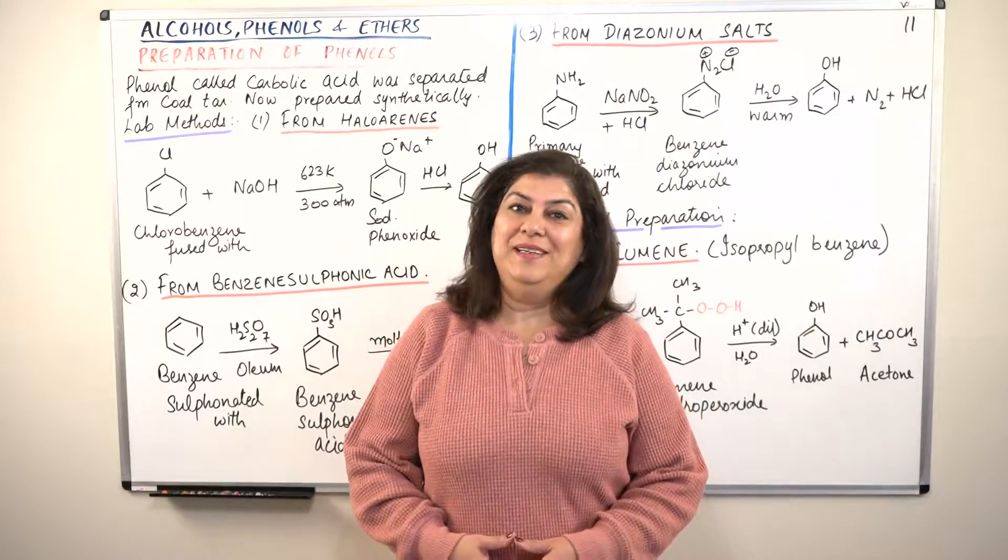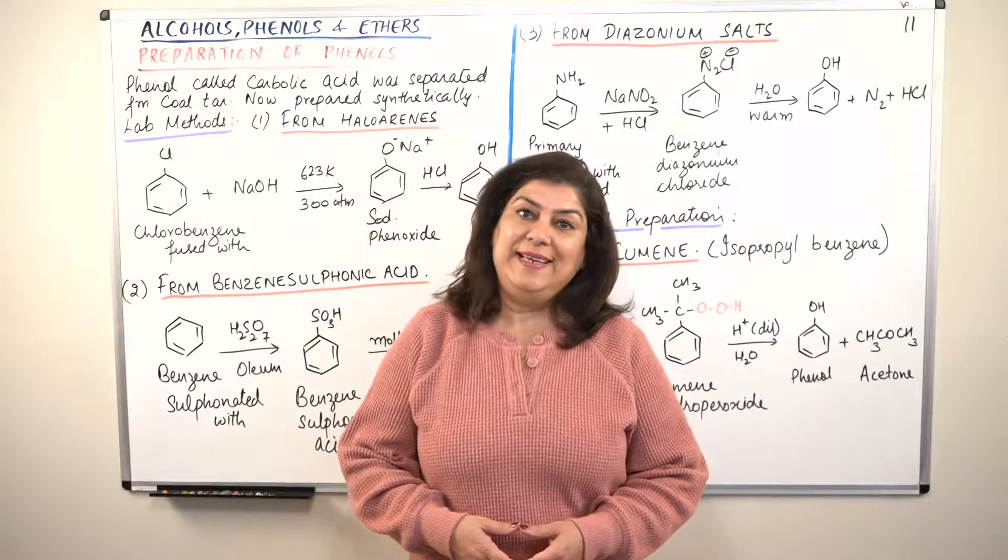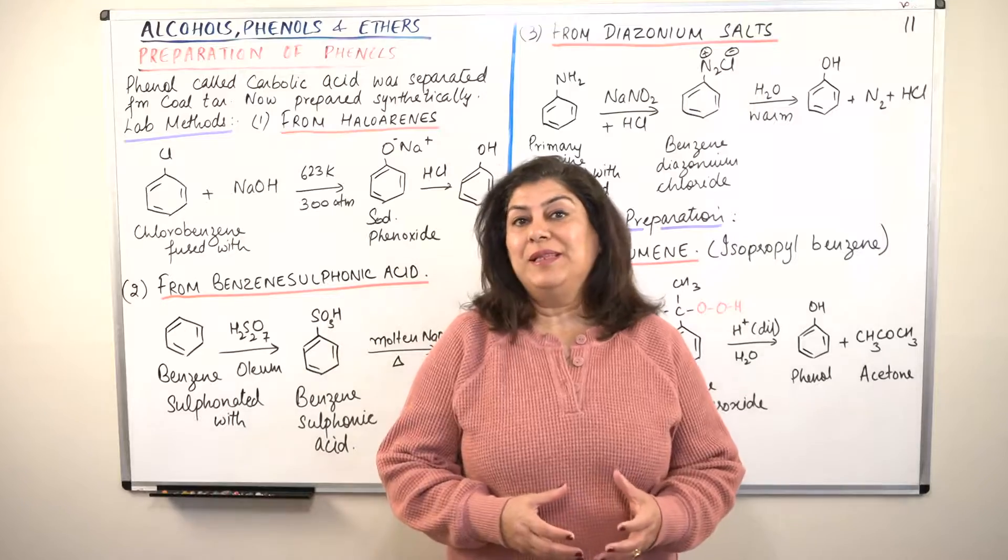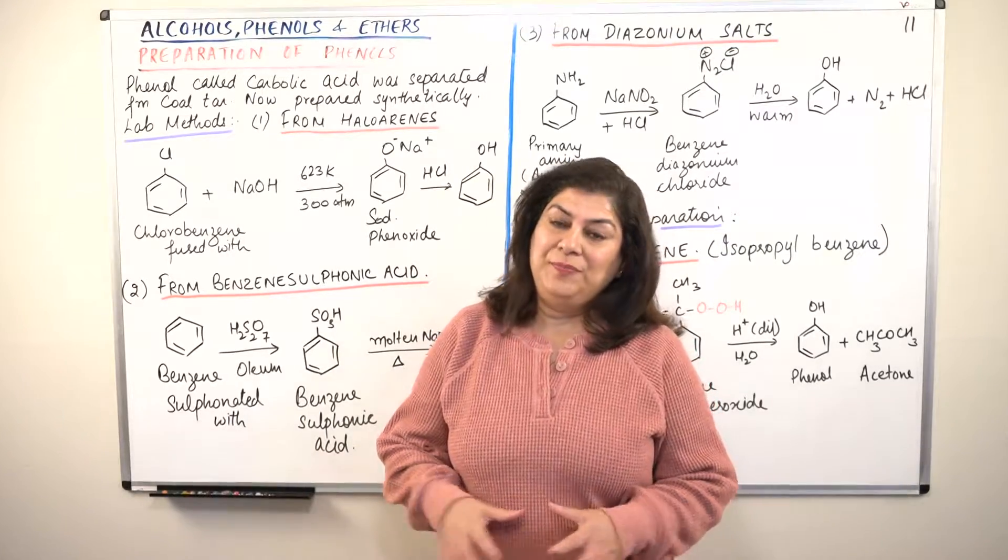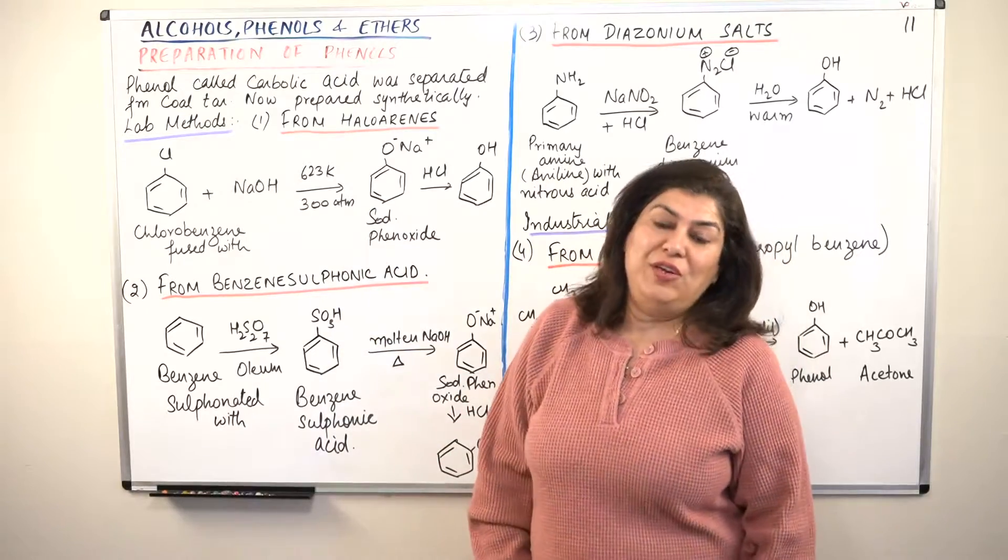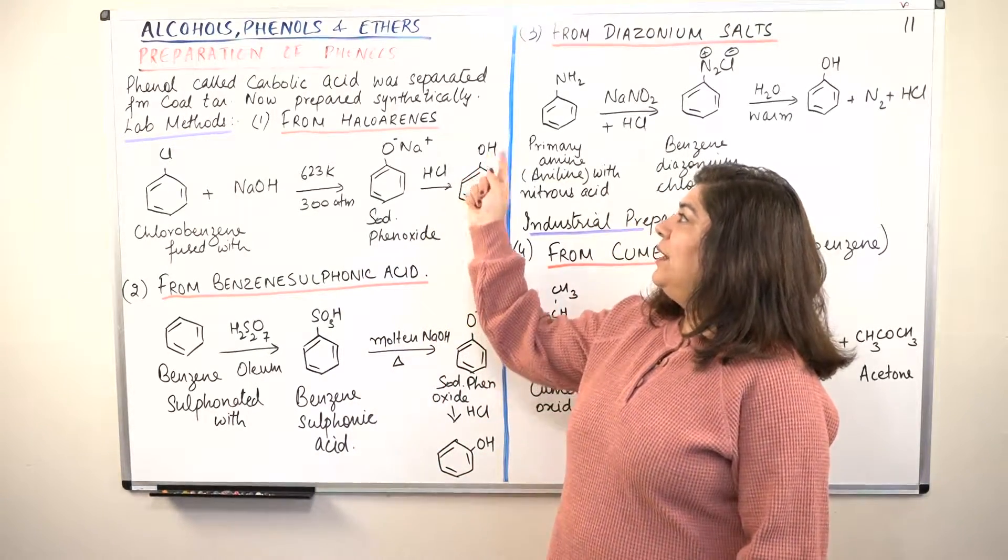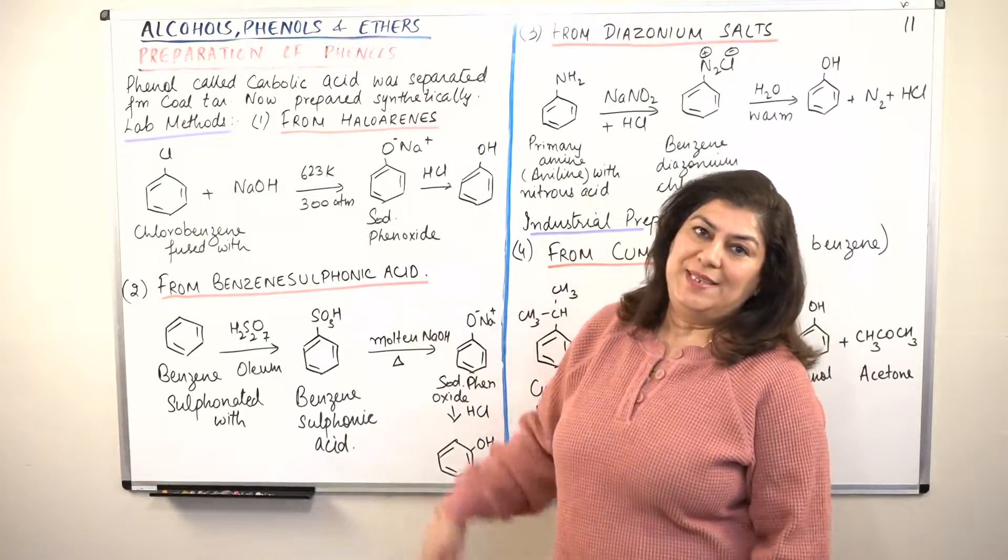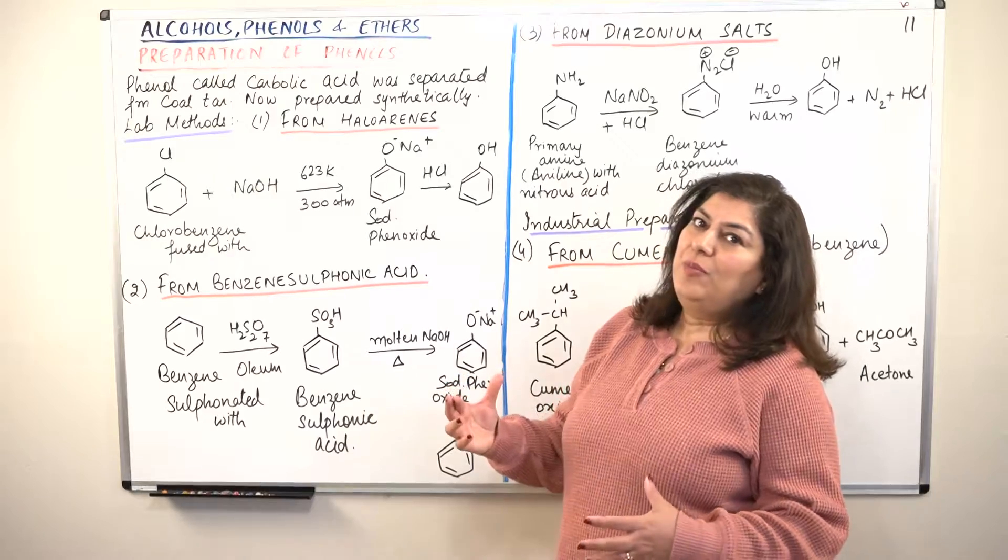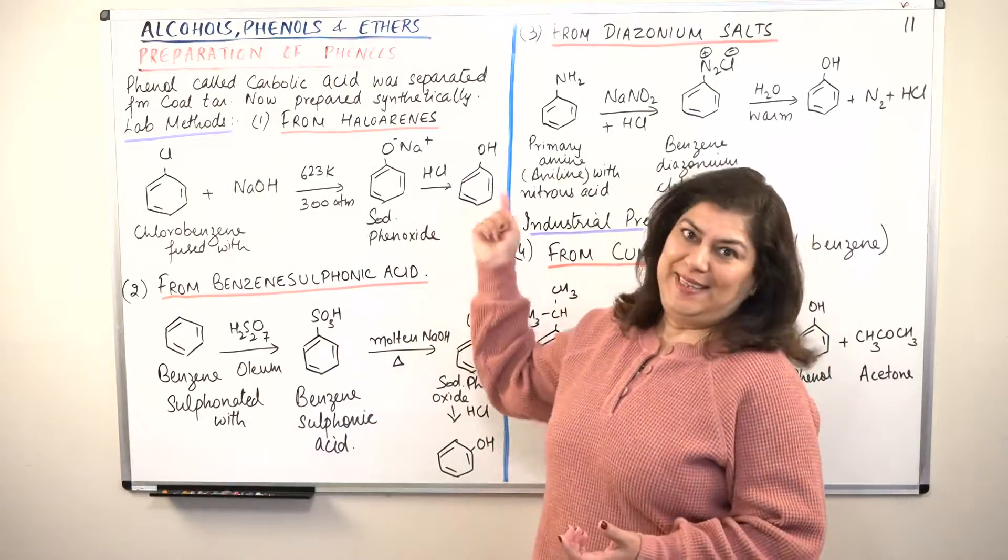Hello, I'm Seema and welcome to part 11 of the chapter on alcohols, phenols and ethers. In the previous few videos we have been discussing the methods of preparation of alcohols. In this video we'll discuss the methods of preparation of phenols. As you know, a phenol is an OH group attached to a benzene ring. So phenols are basically prepared from some substituents of benzene.